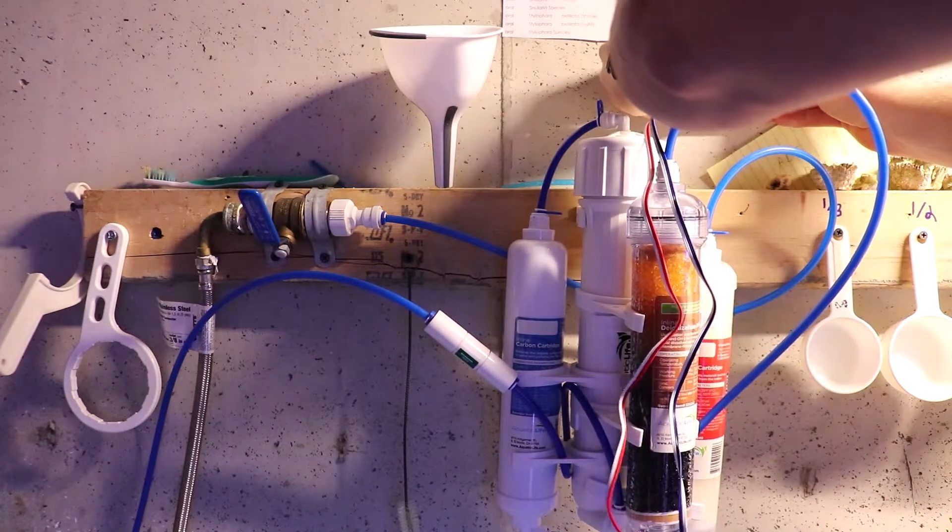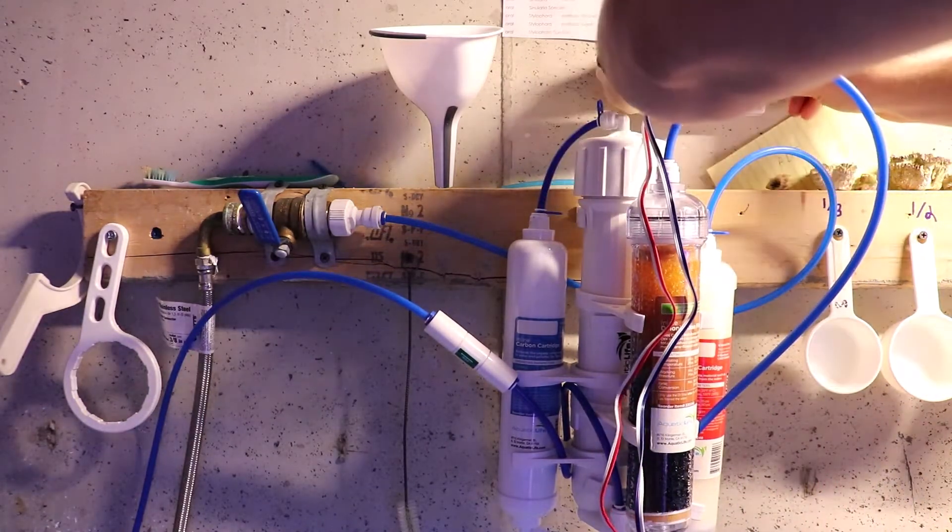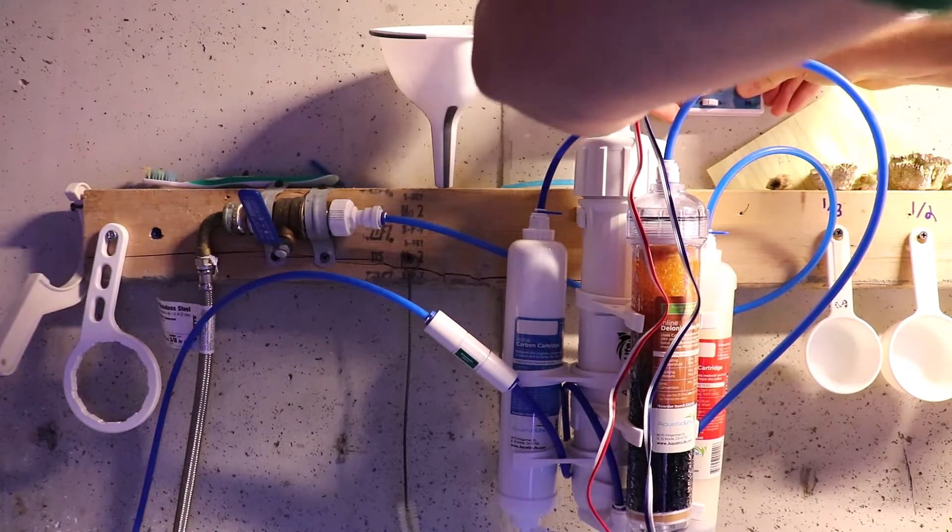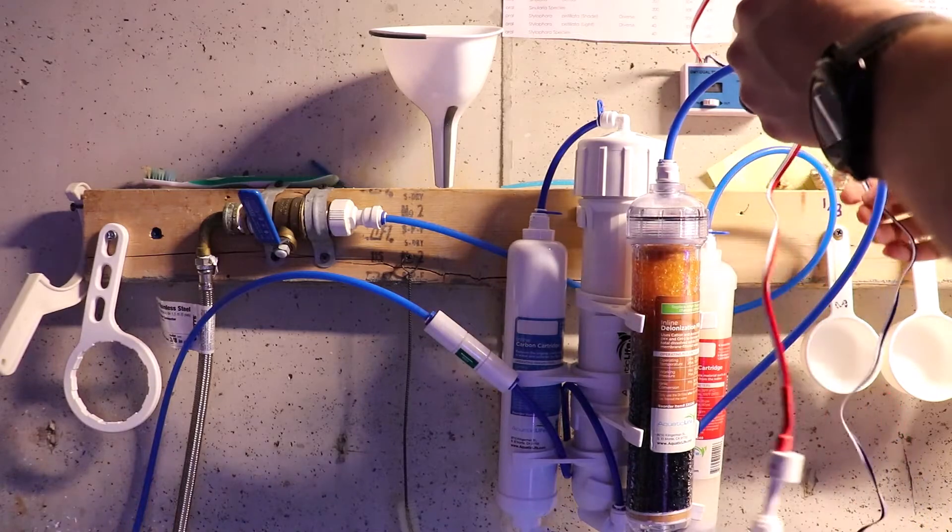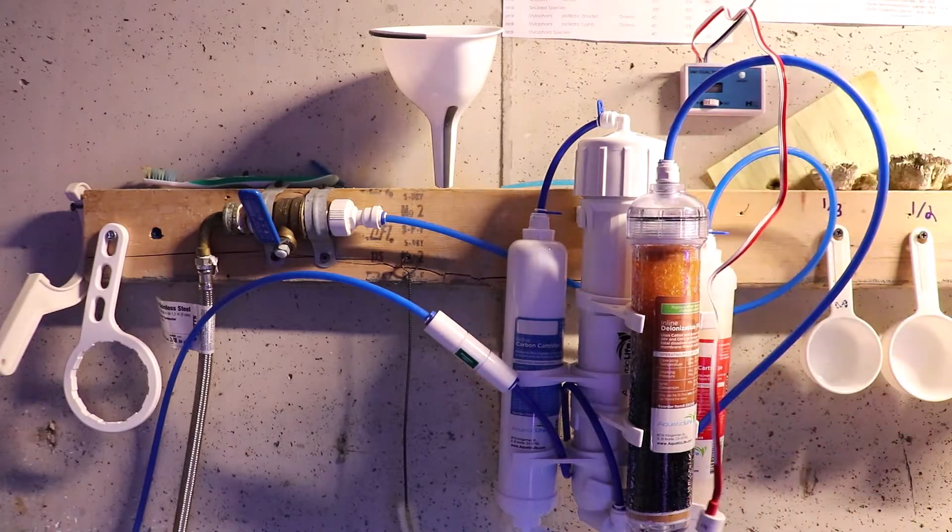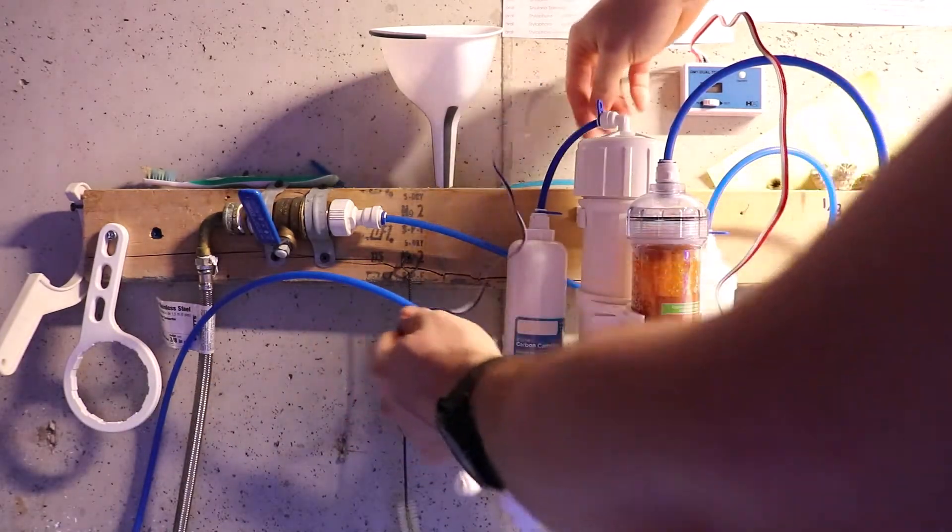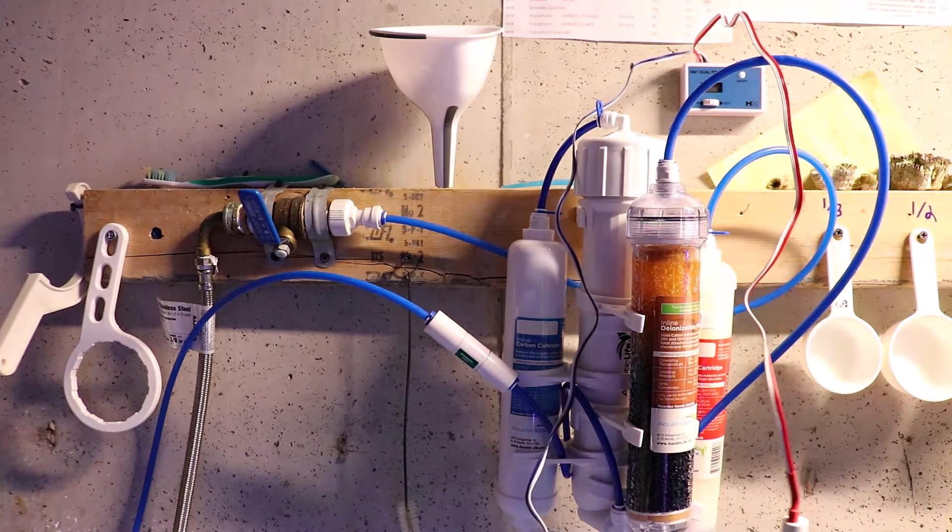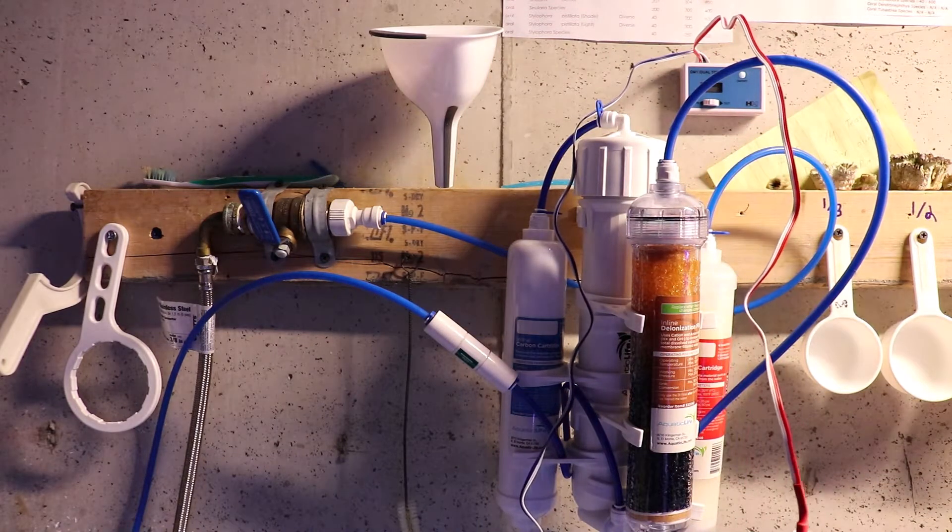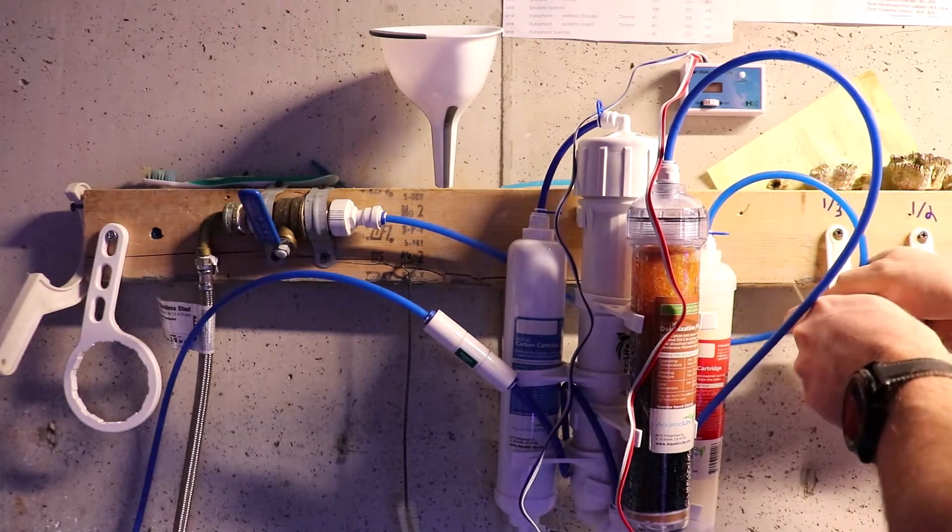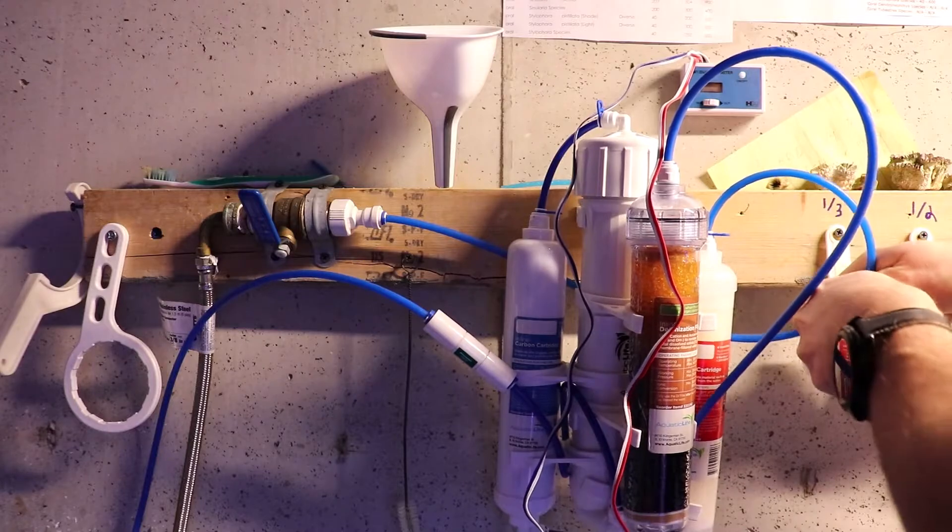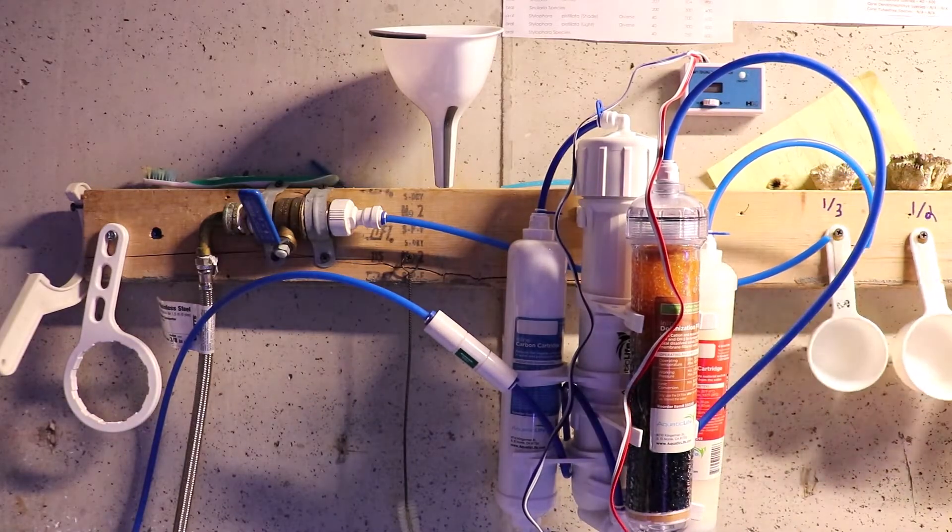So the first one we're going to do is our water coming into the RODI unit. Your water line coming into the filter, we're going to splice in the first T. This quarter-inch tubing cuts pretty easy. I'm just using a pocket knife here.